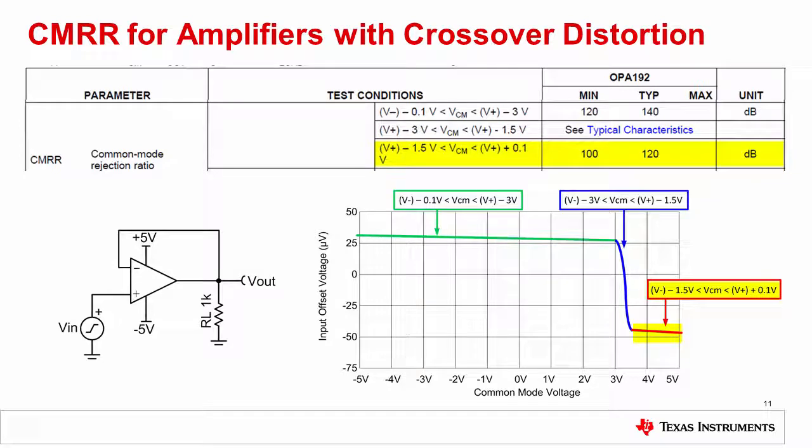In the red region, the NMOS input pair is operating, and the common mode rejection in that region is typically 120 dB.